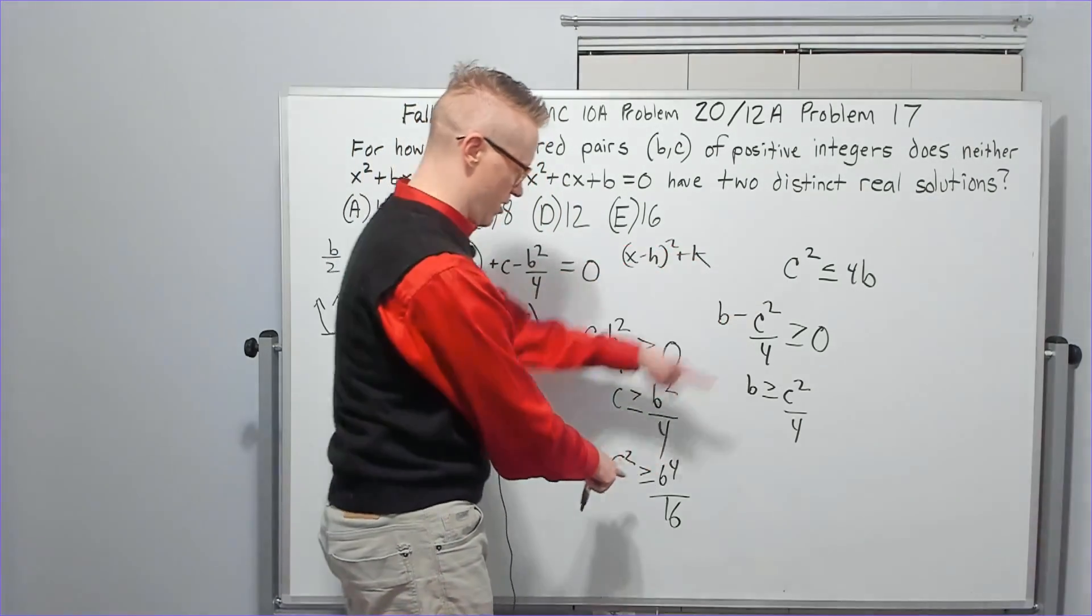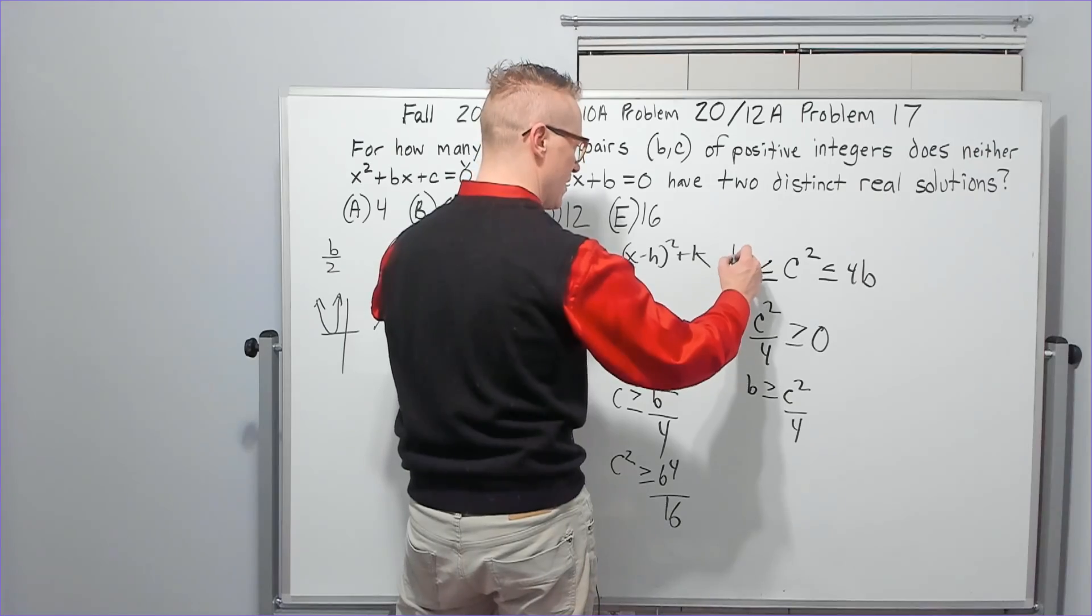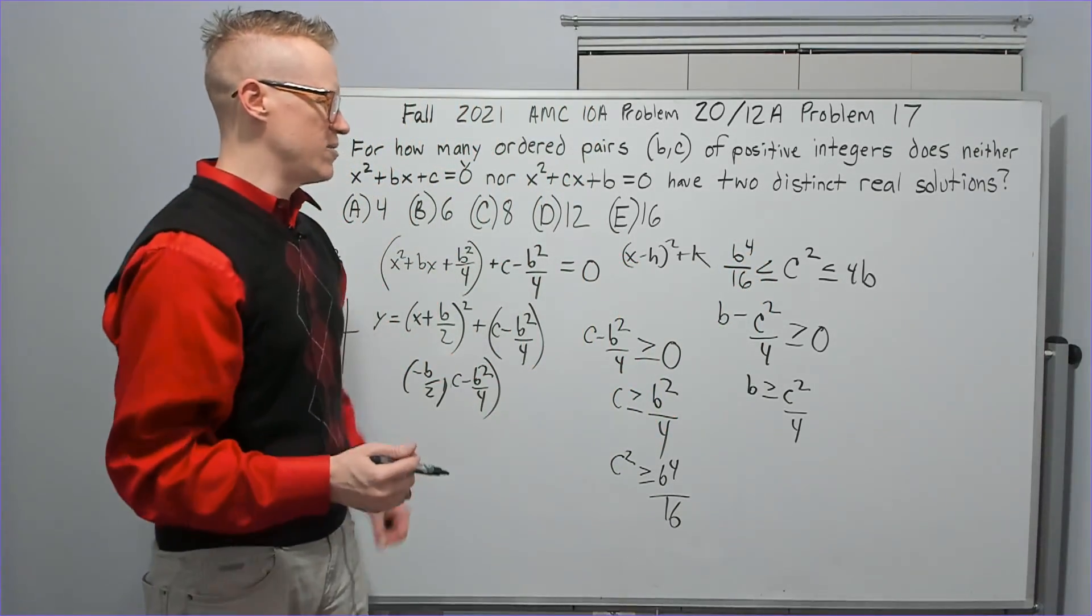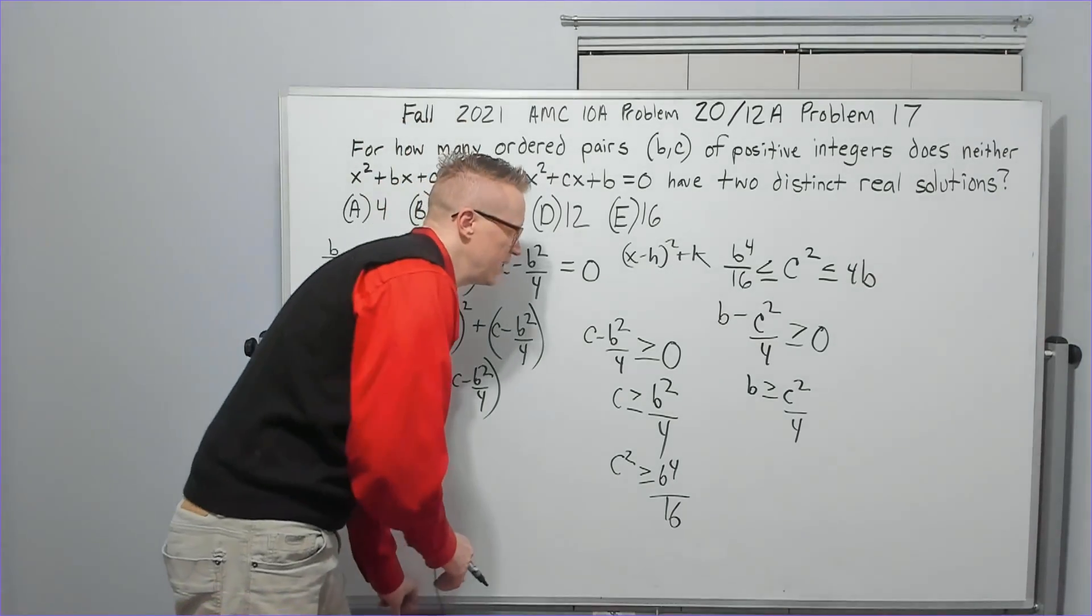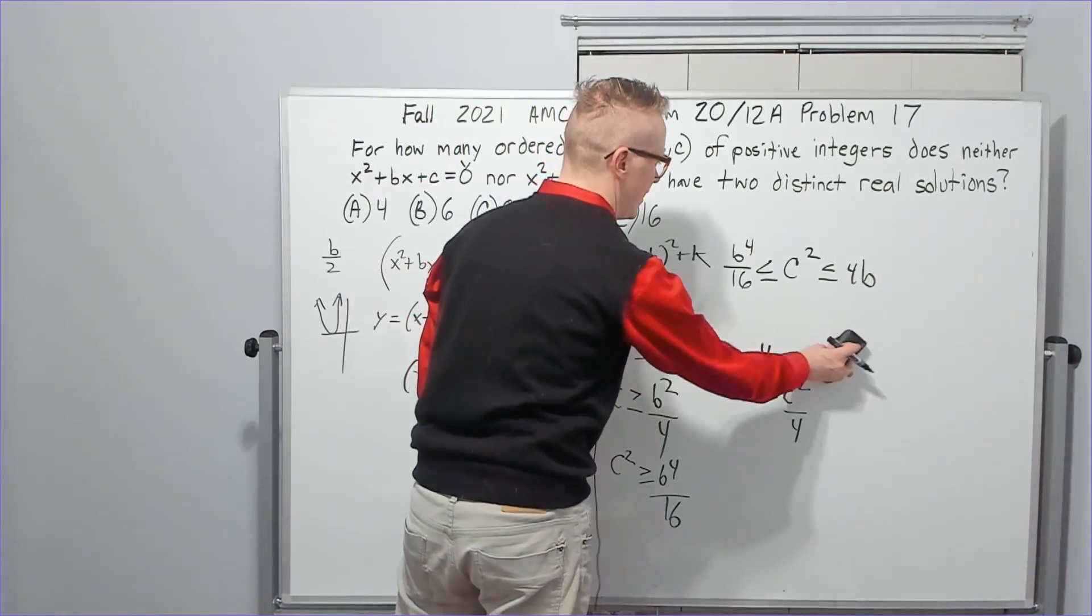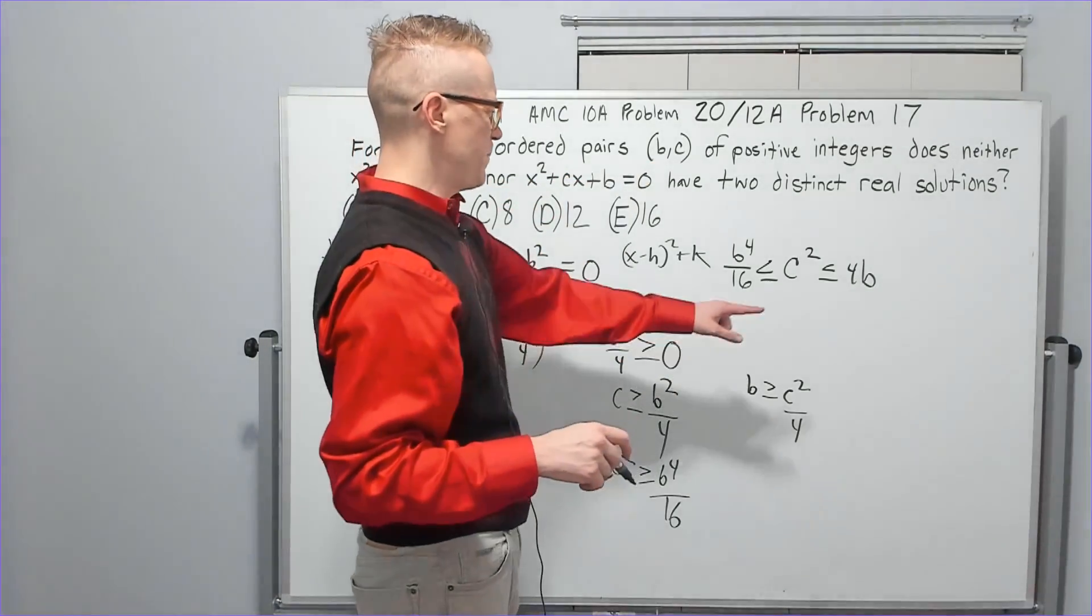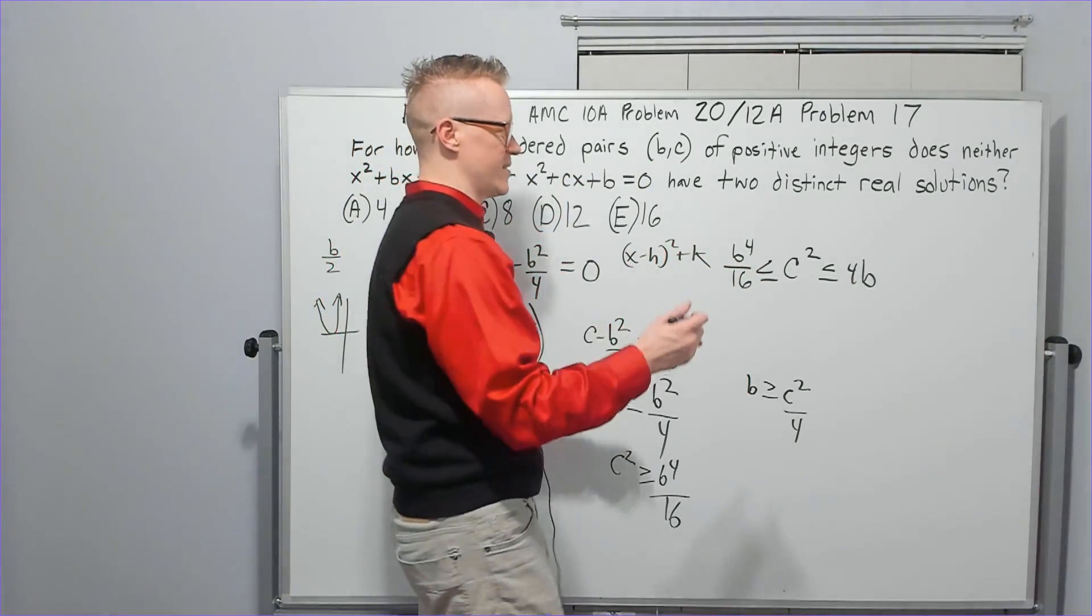Okay, so now at this point, let's go ahead and see what we can create for ordered pairs b, c. I'm just going to pick a value for c and see what happens.